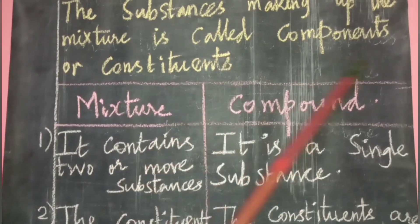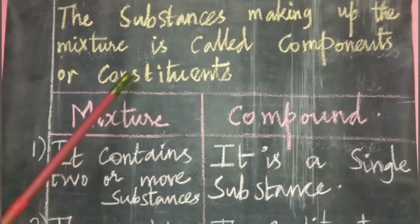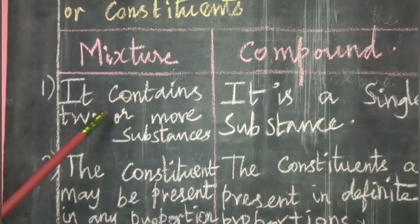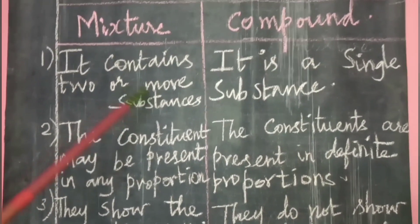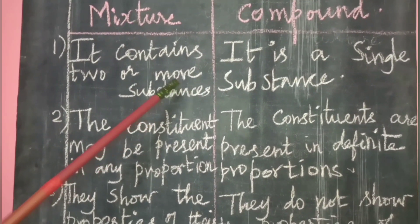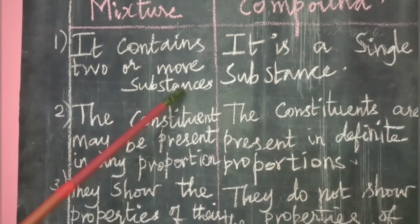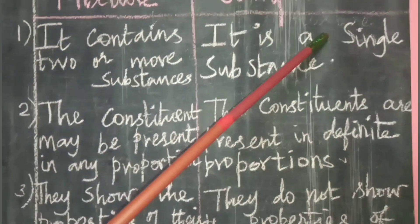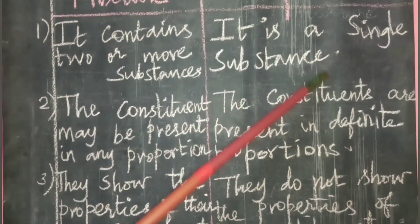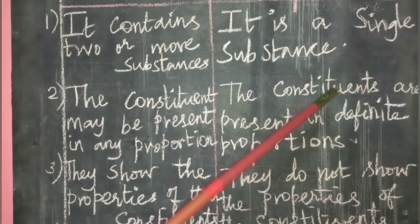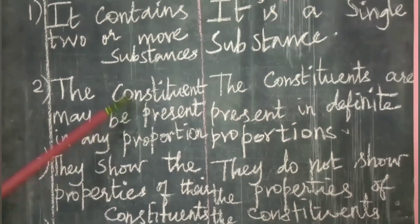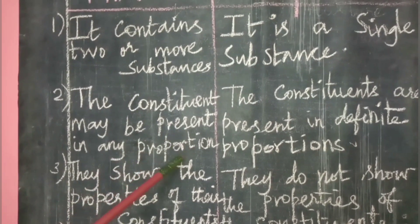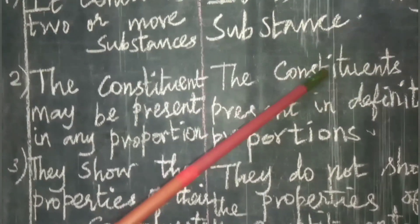The first difference: a mixture contains two or more substances — for example, nitrogen, oxygen, carbon dioxide, and water vapor in air. A compound is a single substance, such as water, sodium chloride, or carbon dioxide. The second difference: in a mixture, the constituents may be present in any ratio or proportion, whereas in a compound the constituents are present in a definite ratio.